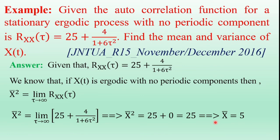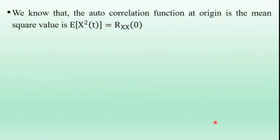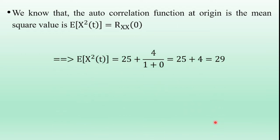Next, find the variance. Before that, first calculate E[x²(t)]. Using the properties of the autocorrelation function, E[x²(t)] = Rxx(0). In the given autocorrelation function, substituting τ = 0, we get E[x²(t)] = 25 + 4/(1 + 0) = 25 + 4 = 29.